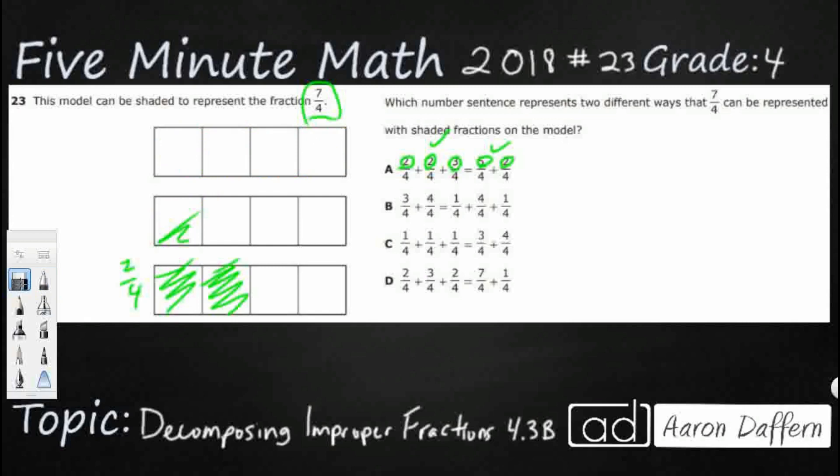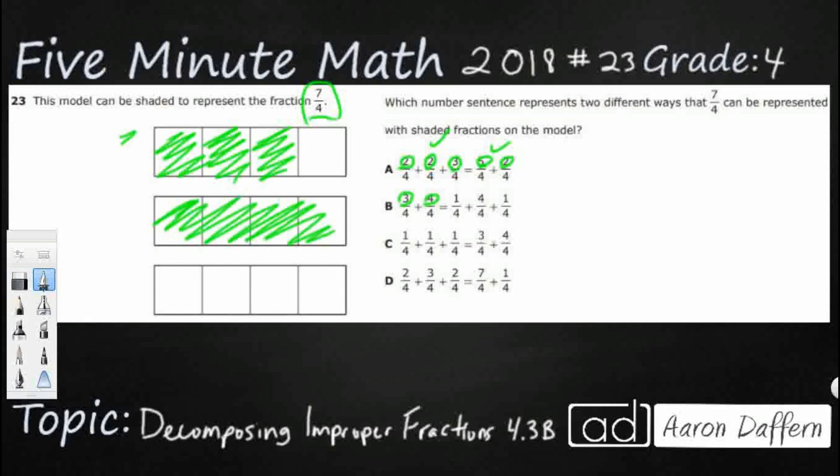Let's double check our other solutions. So I've got a 3 fourths and 4 fourths. That looks like it's going to work because I know that 3 and 4 make 7. So let's get that right there. I've got 3 fourths, 4 fourths. Yes, looking good.